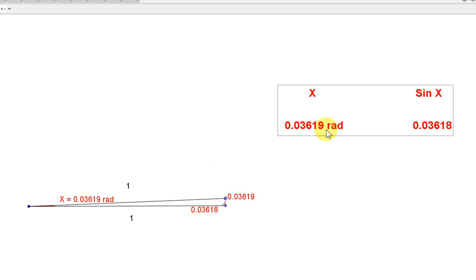Here, x is 0.03619 radians. This is about 2 degrees. And you can see that the sin of x in radians is accurate to four decimal places. To four decimal places, this is 0.0362. And this is also 0.0362. As a matter of fact, for angles x less than 5 degrees, the sin of x in radians is very close to x in radians.